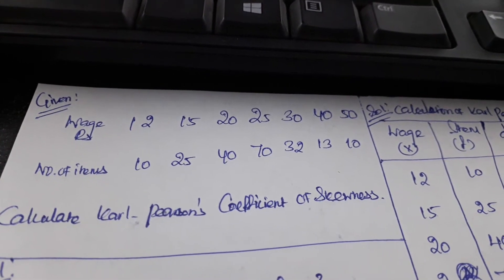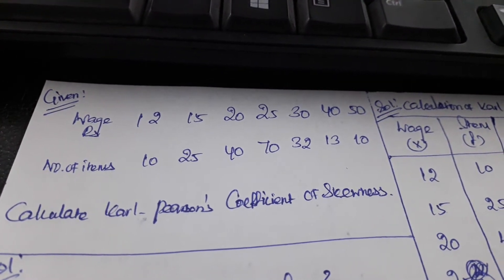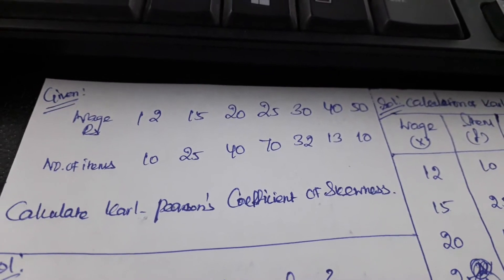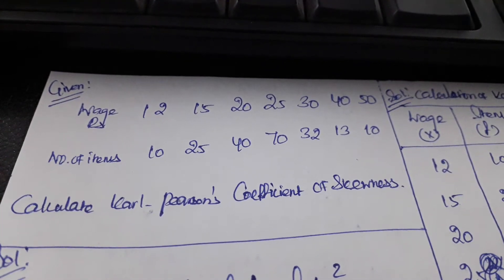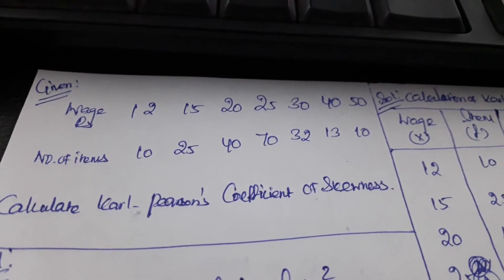In our book we have some data through which we have to calculate the coefficient of skewness under Karl Pearson's method. Wages are given, number of items are also given.